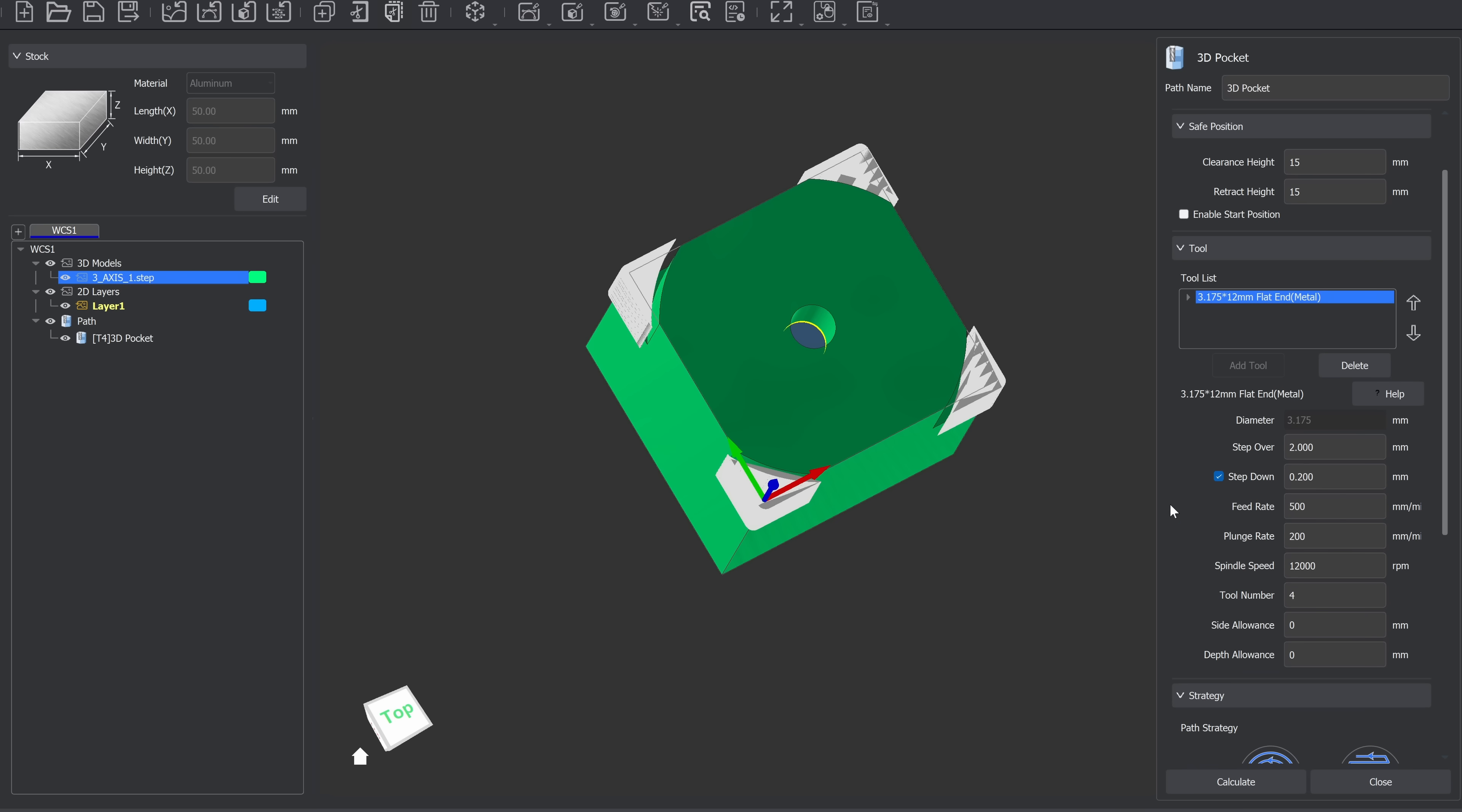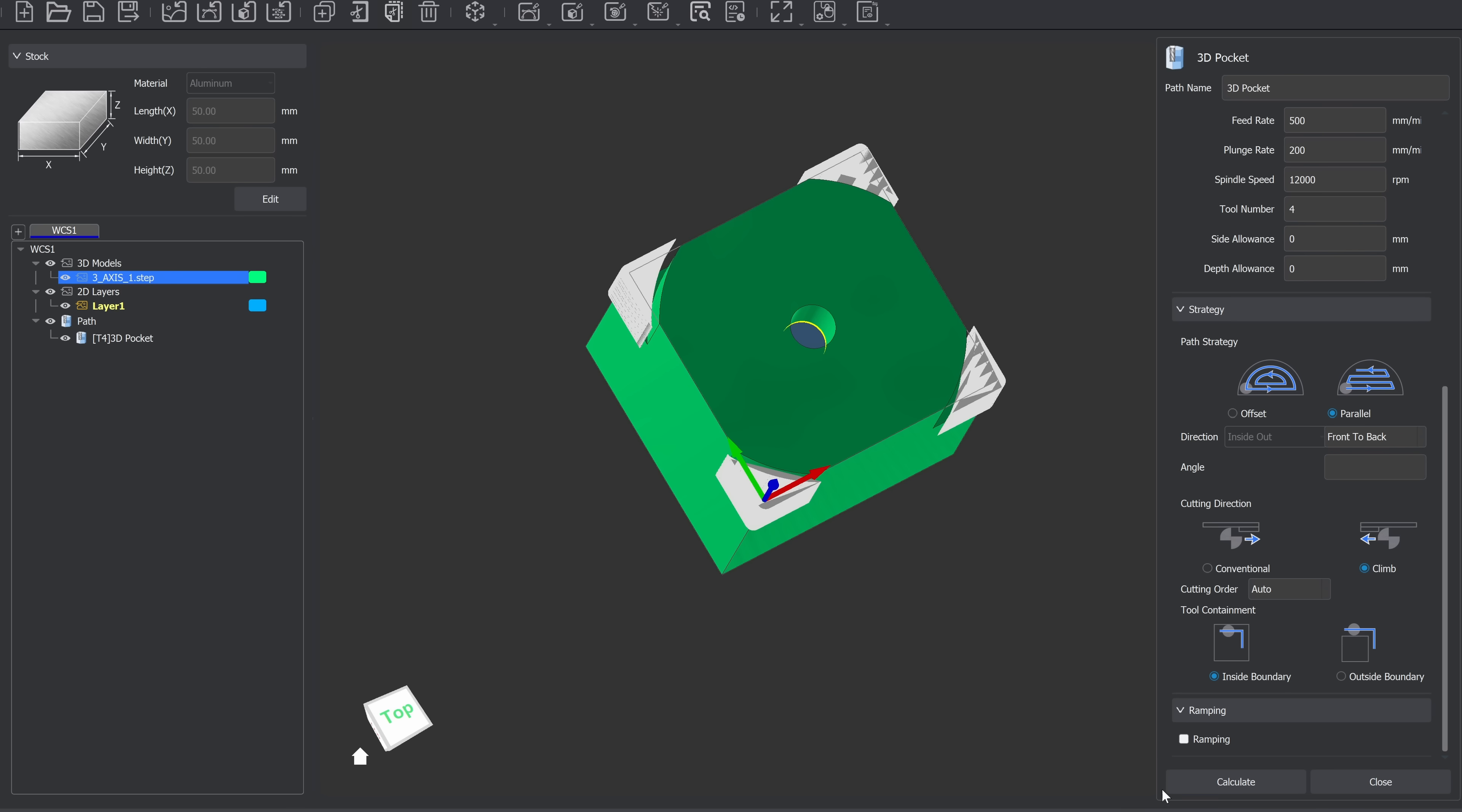The cam software is actually really intuitive, where you just set your material stock size, import your model, align it with that stock, and then start selecting features from which you want to remove material from. I did encounter some quirks with the cam software, and to be fair, this is a beta release, so it might be related to that.